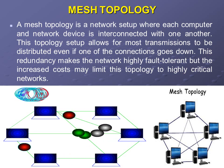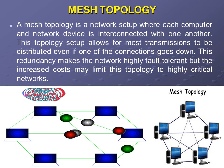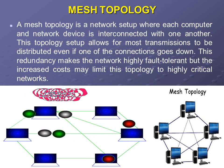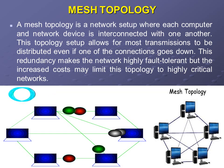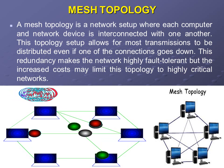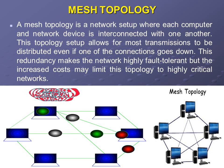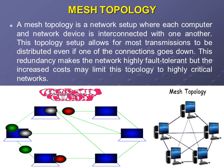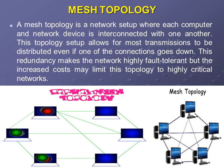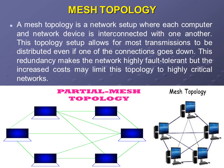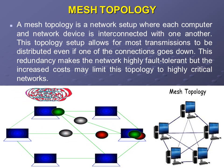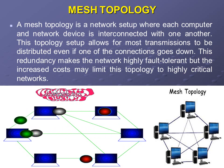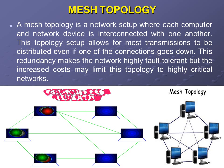Mesh topology is a network setup where each computer and network device is interconnected with one another. This topology allows transmissions to be distributed even if one connection goes down, making the network highly fault tolerant. However, the increased cost may limit this topology to highly critical networks, since each computer has connections to two or three or more nodes, making it very costly.